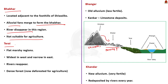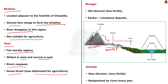The Terai region consists of flat, marshy areas that lie parallel to the Bhabar region. It is widest along Bihar and eastern Uttar Pradesh and narrowest in the east. The rivers that disappear in the Bhabar region reappear in the Terai region. This region is densely forested, but presently these areas are being deforested for agriculture.